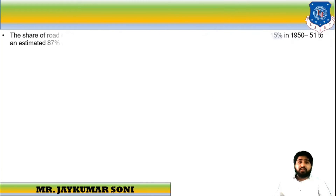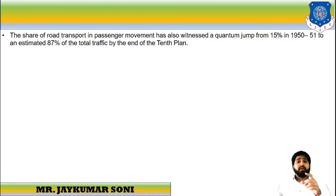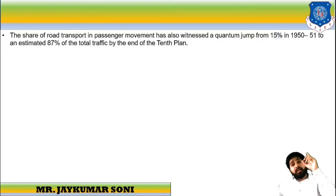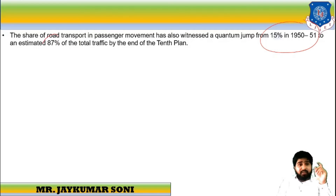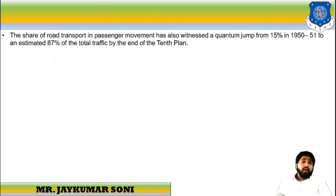If we discuss about the share of road transport, you will be amazed to learn that the share of road transport in passenger movement witnessed a quantum jump — from 15% in 1950-51, it increased to 87% by the end of the 10th plan, approximately by 2010. This is a jump of more than 60%, which shows what kind of growth the transportation sector is having.